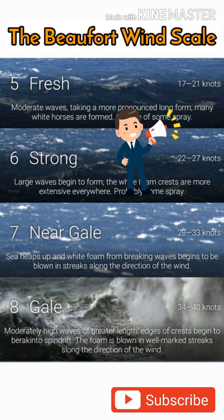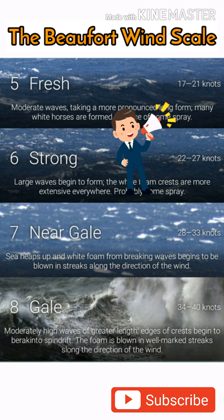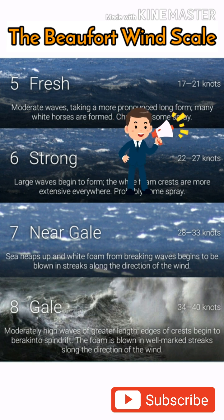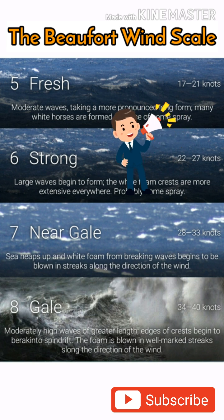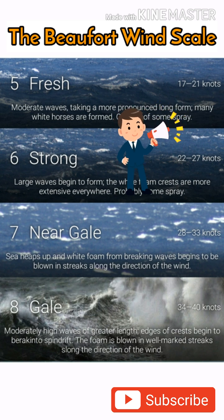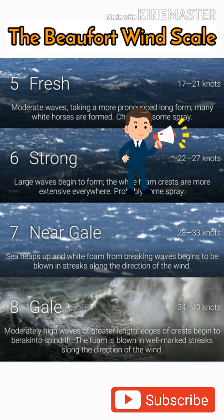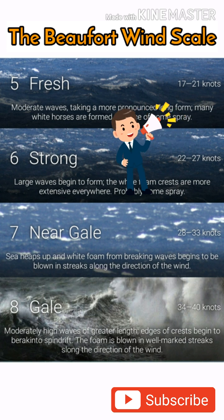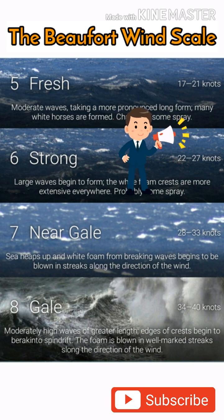Force 7 — Near Gale. Wind speed 28 to 33 knots. Sea heaps up and foam blown in streaks across the sea. Force 8 — Gale. Wind speed 34 to 40 knots. Moderately high waves, wave crests begin to break into spindrift.